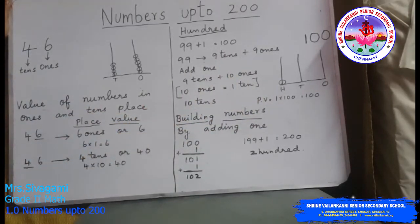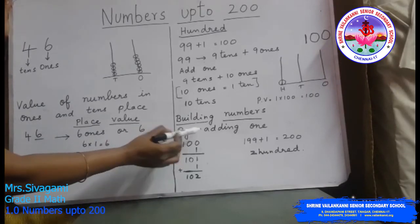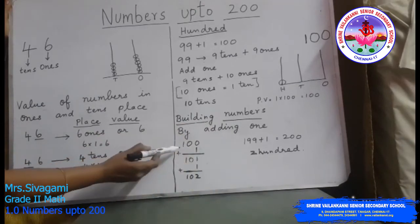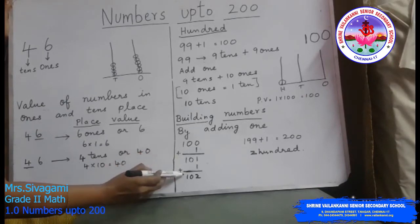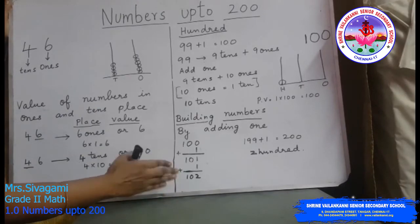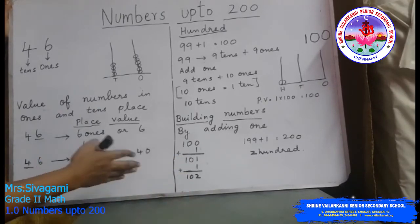Now let us see building numbers. Building numbers is simple — you just have to add 1. By adding 1, you build numbers. For example, 100 plus 1 gives you 101. Again, if you add 1, you get the next number, 102. If you keep adding 1, you get the number after, and it goes on.